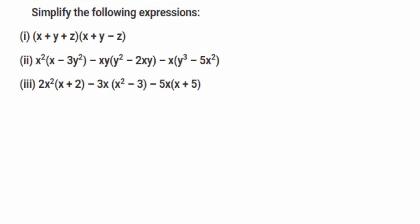Hey everyone, here's a question from algebraic expressions — we have to simplify the given expressions. The first problem asks us to simplify three expressions. The first one is (x + y + z) multiplied by (x + y − z), so we have to open the brackets. Let's start with the first one. I'll write down the question: (x + y + z) times (x + y − z).